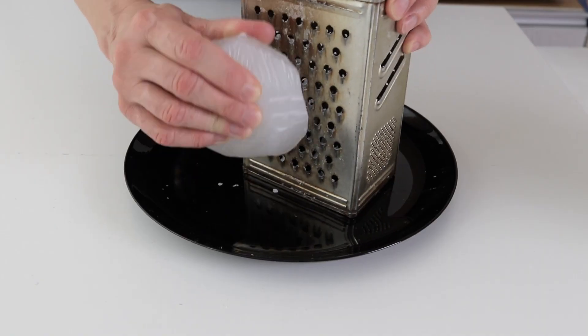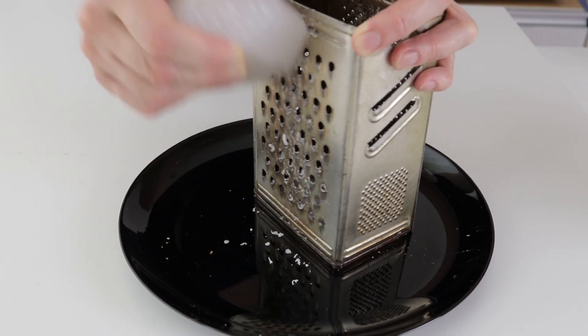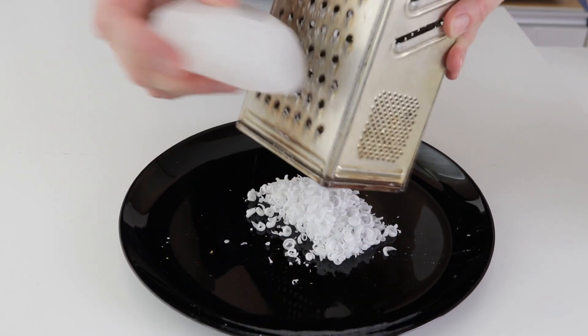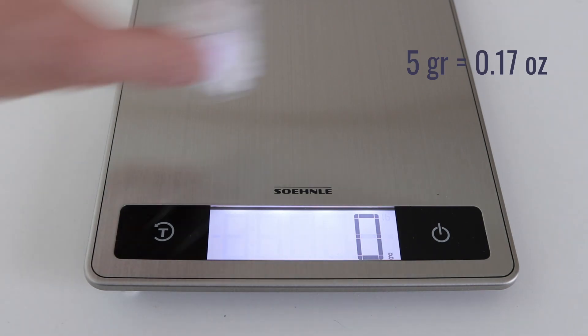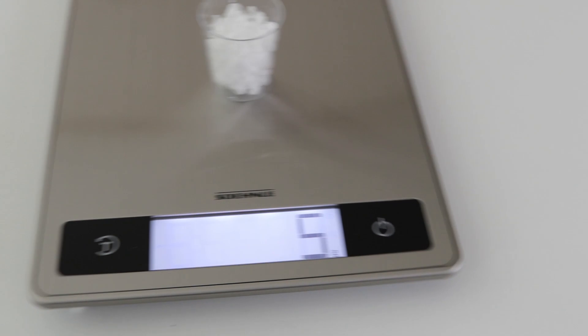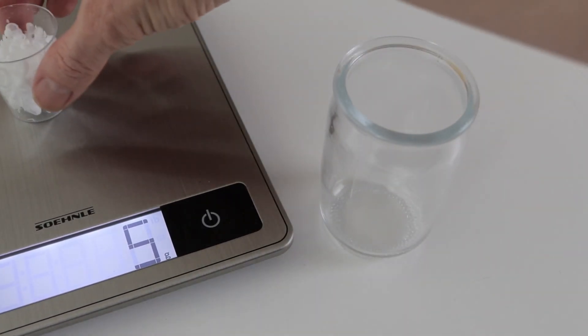You can crush the paraffin wax in many ways, but I usually grind it with an old grater. Here as in the recipe, 5 grams. All our ingredients we will put in one container. I have a small glass jar.